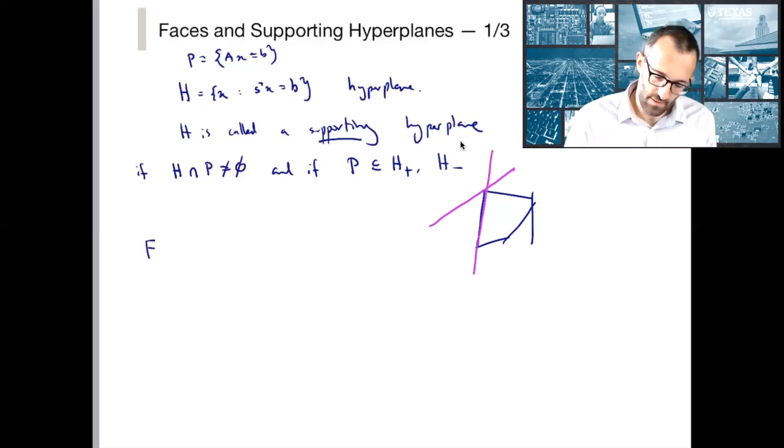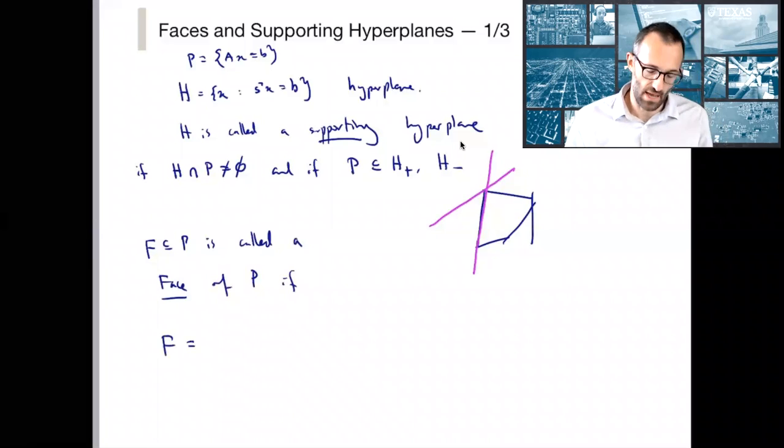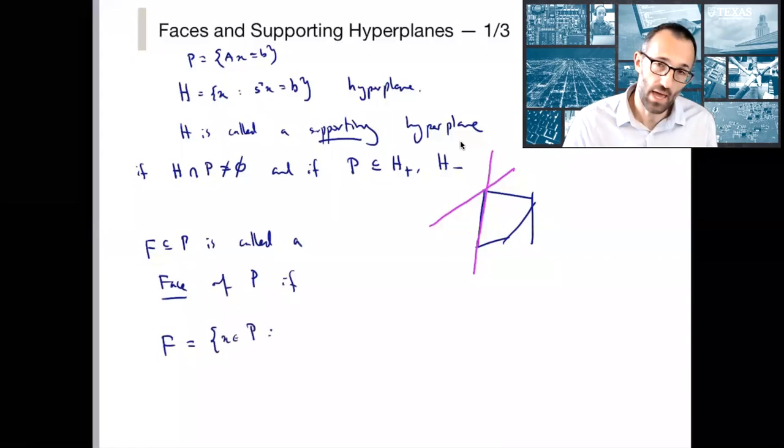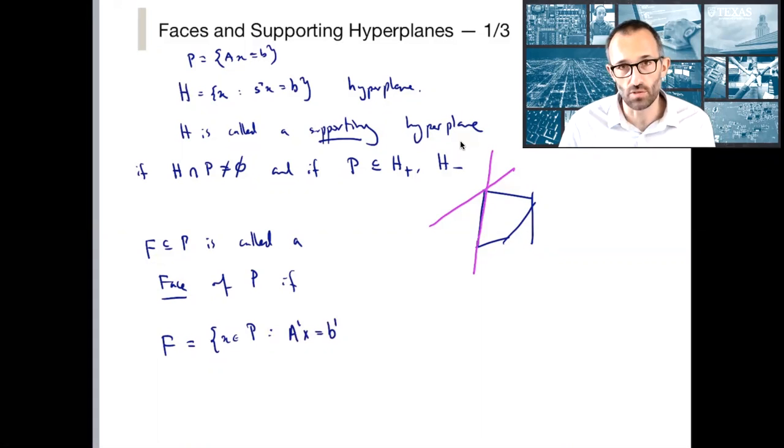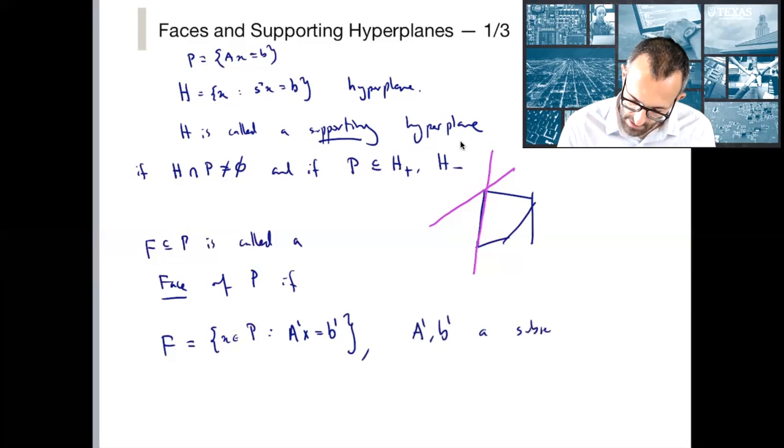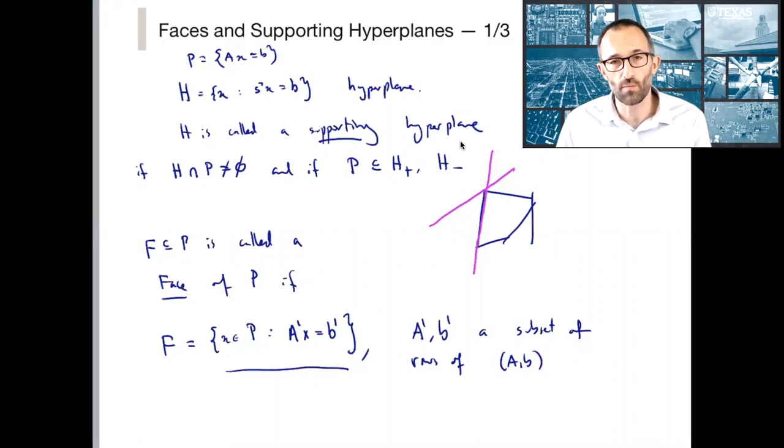Now f, which is a subset of p, is called the face of p if f can be written as all x in p and the intersection of several hyperplanes. So I'm going to write this as a dash x equals b dash. Unfortunately, sometimes dash is used for transpose and probably I've done that as well in the lectures. But here I mean that a dash b dash is a subset of the rows of a b. In other words, a subset of the equalities. All this is saying is just choose some of the inequalities, make them tight. That's what defines a face of p.